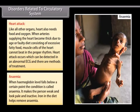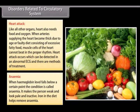Anemia. When hemoglobin level falls below a certain point, the condition is called anemia. It makes the person weak and look pale and inactive. Iron in the diet helps remove anemia.